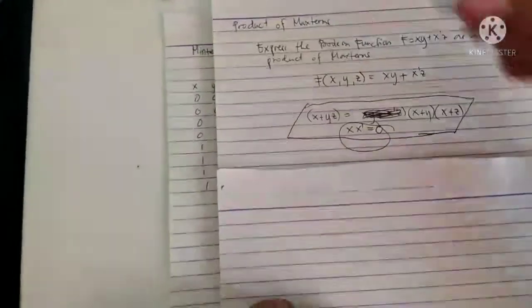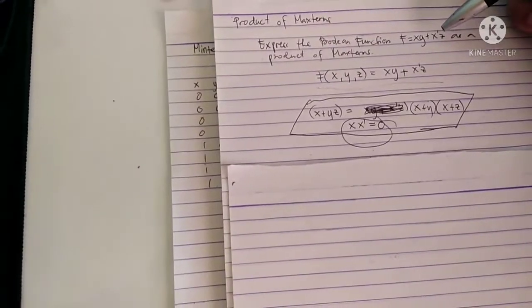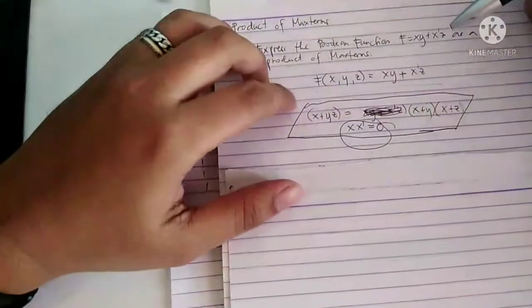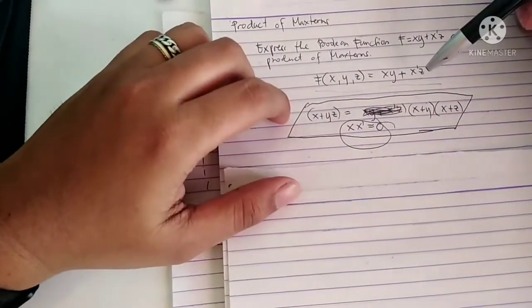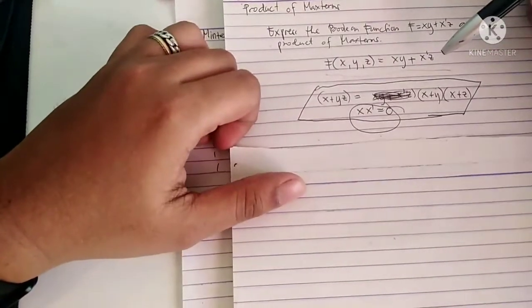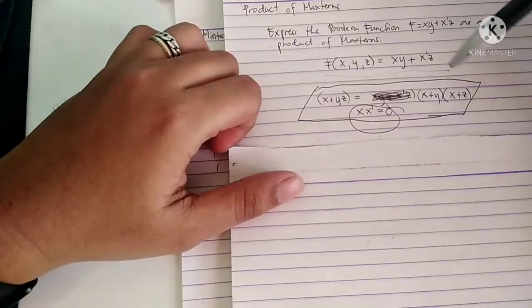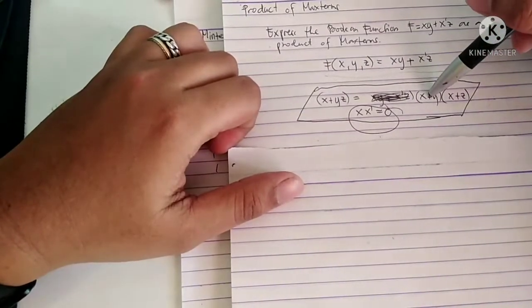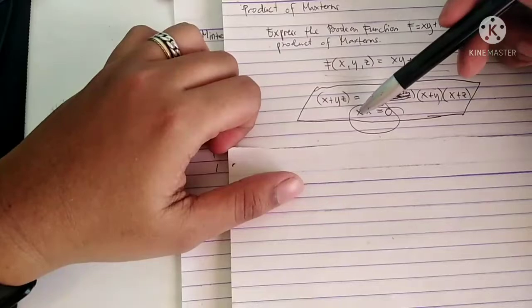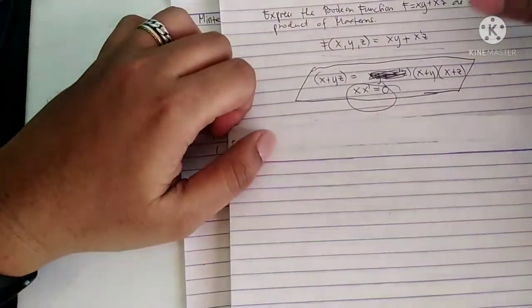Let's have an example: express the Boolean function f = xy + x'z as a product of max terms. This function has three variables x, y, and z. To express this into a product of max terms, we need two identities: x plus yz equals (x plus y)(x plus z), and x times x prime equals 0.